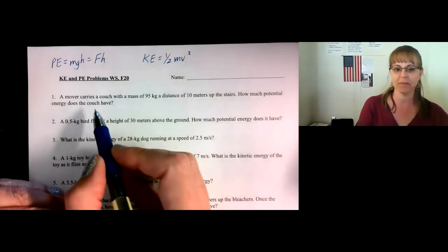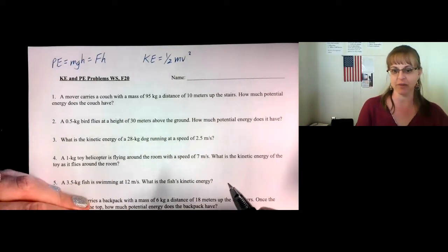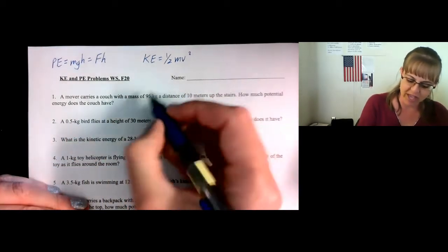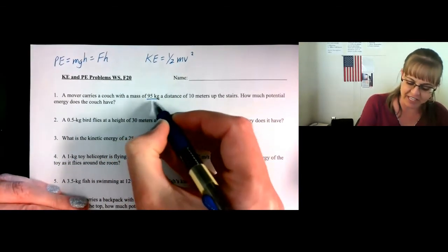So number one, a mover carries a couch with a mass of 95 kilograms, a distance of 100 meters up the stairs. How much potential energy does the couch have? Well, first of all, we have a mass of 95 kilograms, so this is M.